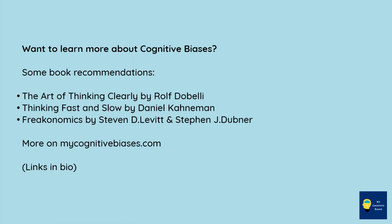Want to learn more about cognitive biases? Some book recommendations: The Art of Thinking Clearly by Rolf Dobelli, Thinking Fast and Slow by Daniel Kahneman, and Freakonomics by Stephen D. Levitt and Stephen J. Dubner.